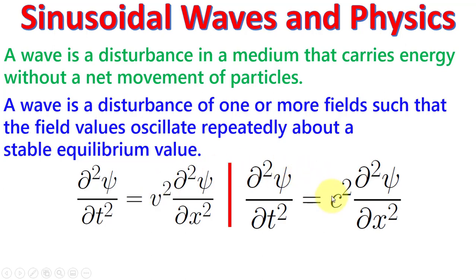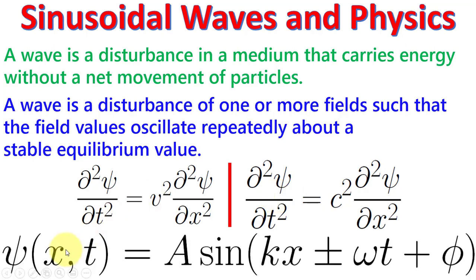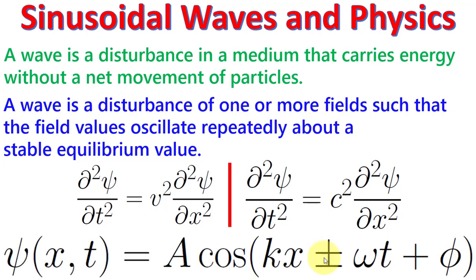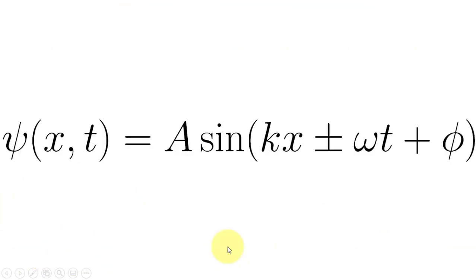V becomes equal to C, the speed of light, when we come to electromagnetic waves. The solution of this equation is: sine(x,t) = A·sin(Kx ± ωt + φ). The solution can also be written with cosine — both sine and cosine are sinusoidally varying periodic functions. The only difference between sine and cosine is their π/2 radian phase shift. So let's discuss this relation.